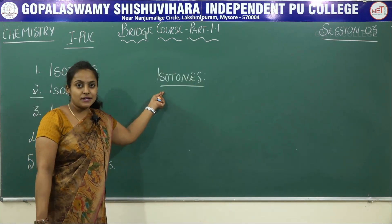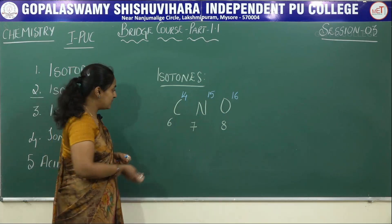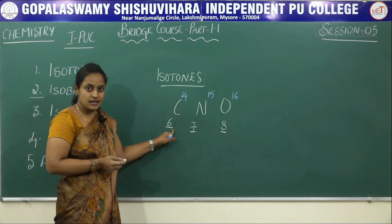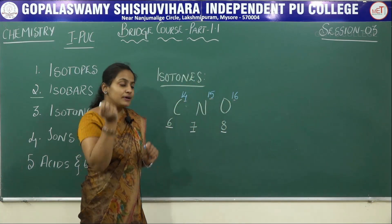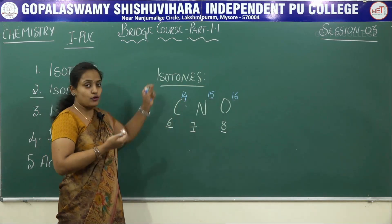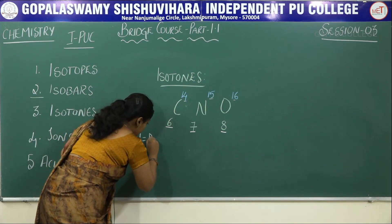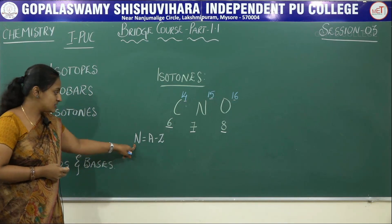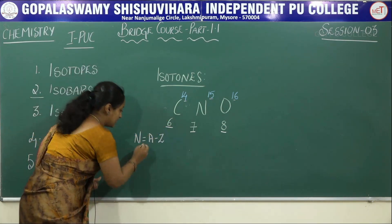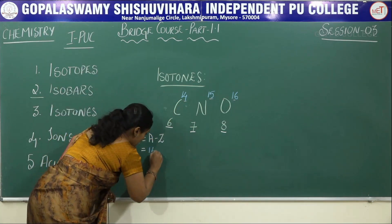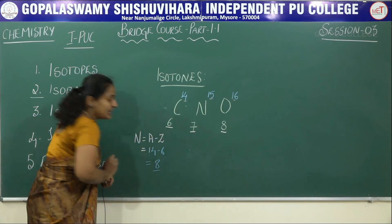Moving on to the next concept: isotones. Consider the example of carbon, nitrogen, and oxygen. The atomic number changes as 6, 7, 8 and the mass number also changes as 14, 15, 16. Both atomic number and mass number are changing. Let us look at the number of neutrons. Neutrons N = A minus Z. For carbon: 14 minus 6 equals 8 neutrons.